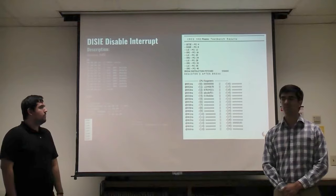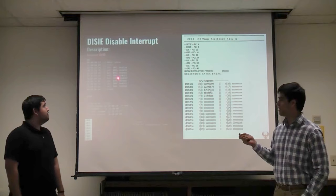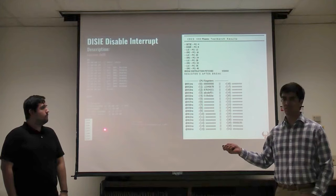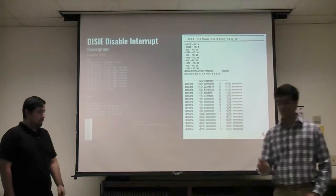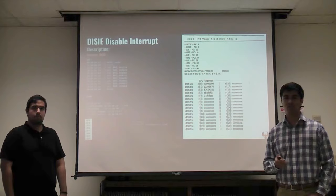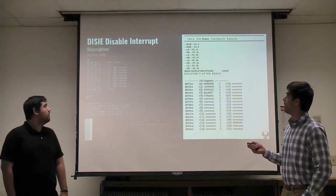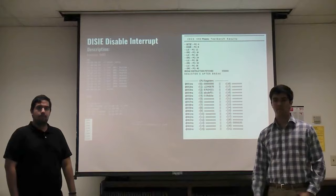The disable interrupt instruction turns off the interrupt enable bit. From the previous interrupt example, we loaded and asserted the interrupt enable flag. Here, after 200 time units the interrupt signal is asserted — same as before — but because we disable the interrupt in the second instruction, the CPU never enters the ISR. It goes straight through without executing ISR instructions, confirming the disable interrupt works.